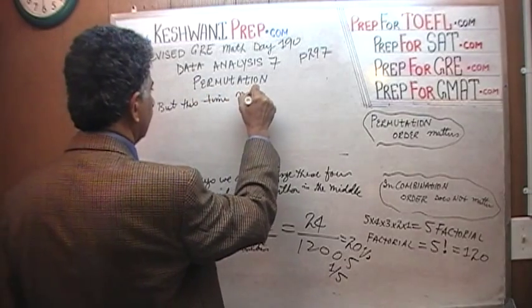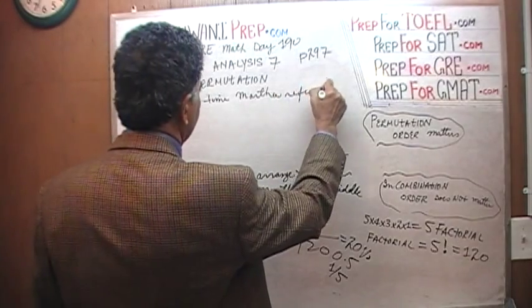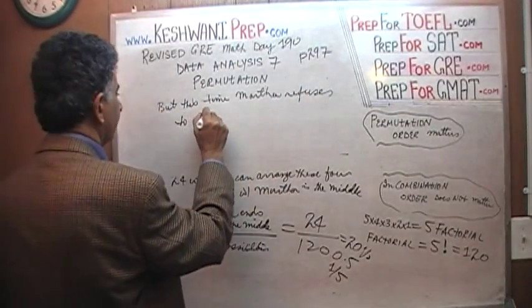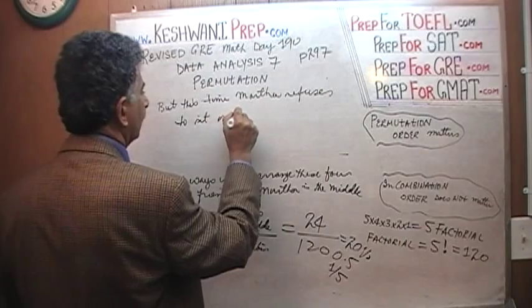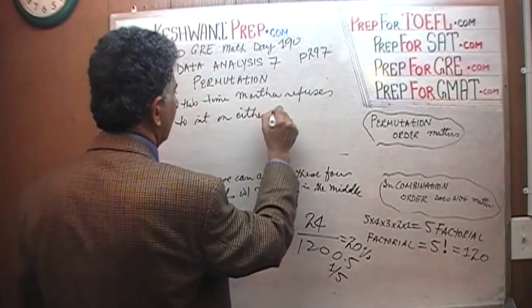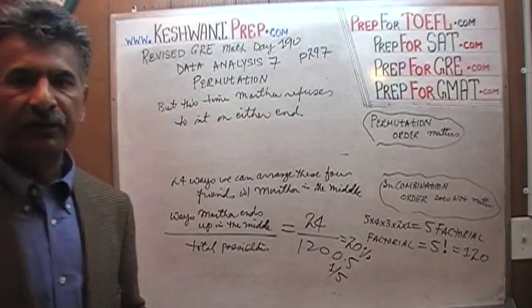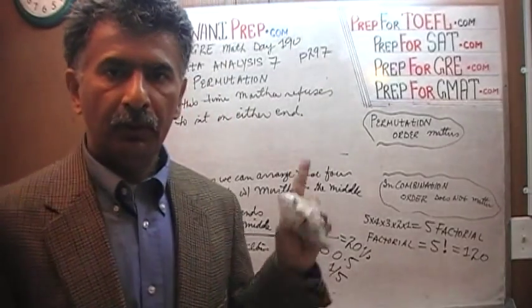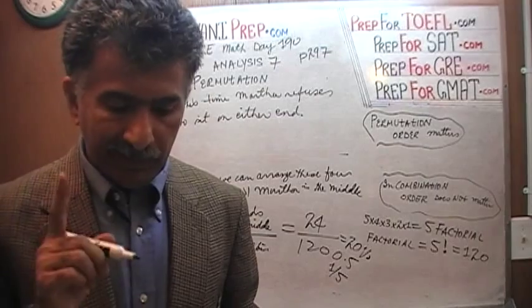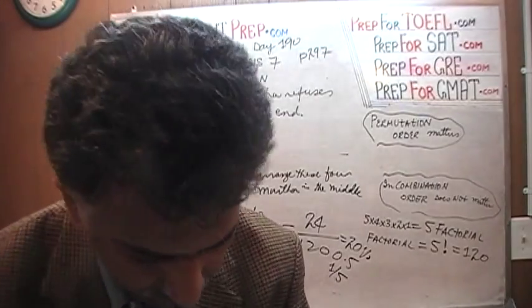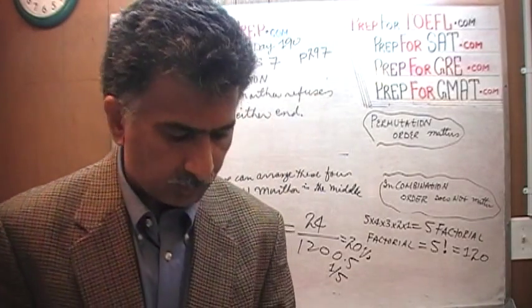Martha refuses to sit on either end. The question is how many different ways can we arrange the people now. Work on the problem on your own and if you need help I'm going to give you a little help and then we'll do it tomorrow together.